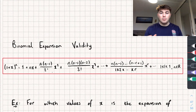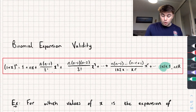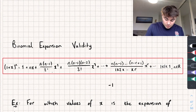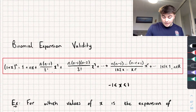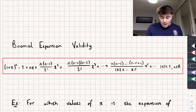We'll start by talking about what we mean by the range of values for which our expansion is valid. If we take a look at this formula — the one in the red box — it says it's only valid if the modulus, or absolute value, of x is strictly less than 1. That means x has to be strictly greater than negative 1 and strictly less than positive 1. I talk about why that is in my previous video.